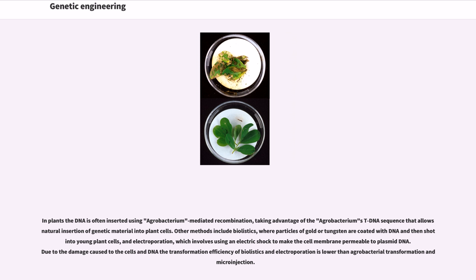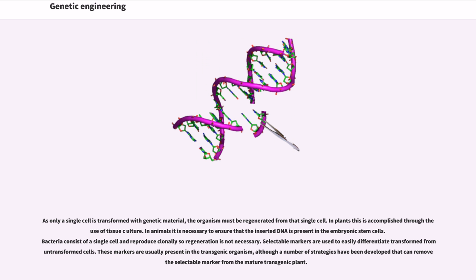DNA is generally inserted into animal cells using microinjection, where it can be injected through the cell's nuclear envelope directly into the nucleus, or through the use of viral vectors. In plants, the DNA is often inserted using agrobacterium-mediated recombination, taking advantage of the agrobacterium T-DNA sequence that allows natural insertion of genetic material into plant cells. Other methods include biolistics, where particles of gold or tungsten are coated with DNA and then shot into young plant cells, and electroporation, which involves using an electric shock to make the cell membrane permeable to plasmid DNA. The transformation efficiency of biolistics and electroporation is lower than agrobacterial transformation and microinjection.